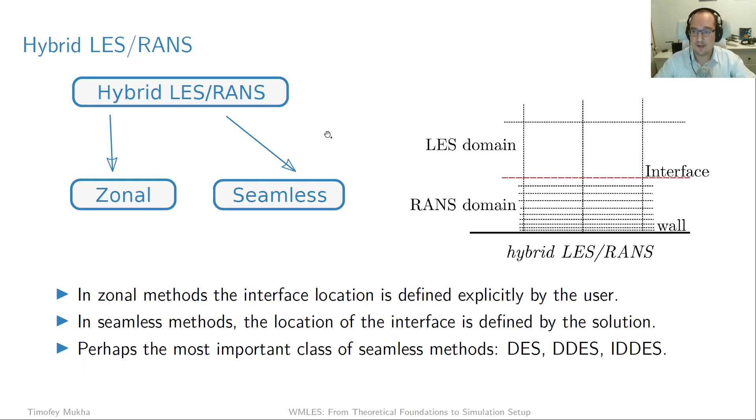Now, there are two classes of methods within hybrid LES RANS that we're going to distinguish. The first method is zonal. And the idea here is that the location of this interface is explicitly defined by the user. So basically, you say to the solver that, okay, up to this point, you're going to solve RANS. And then above that, you're going to solve LES equations, okay?